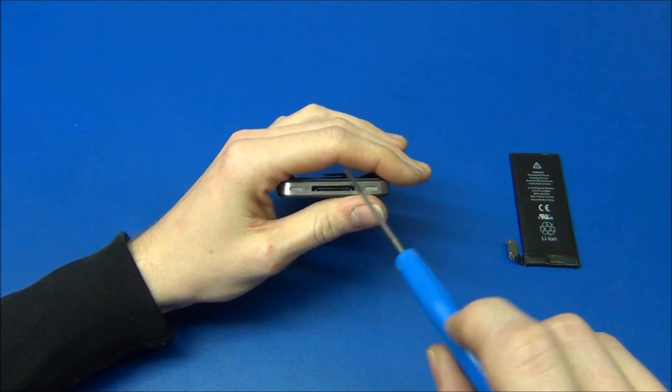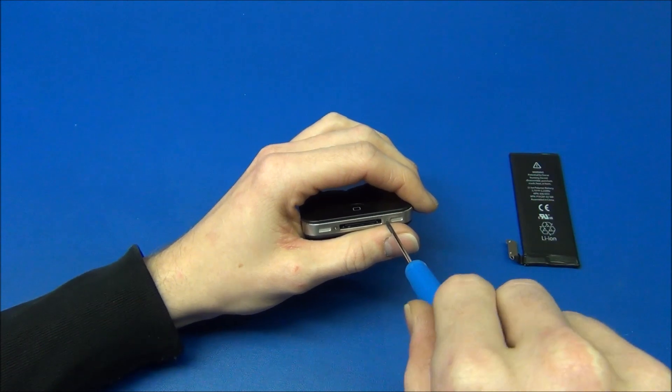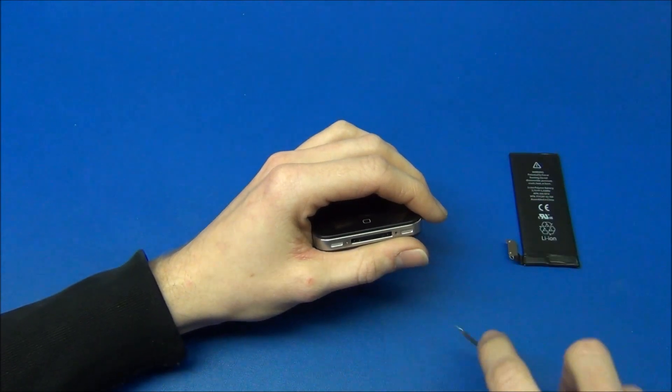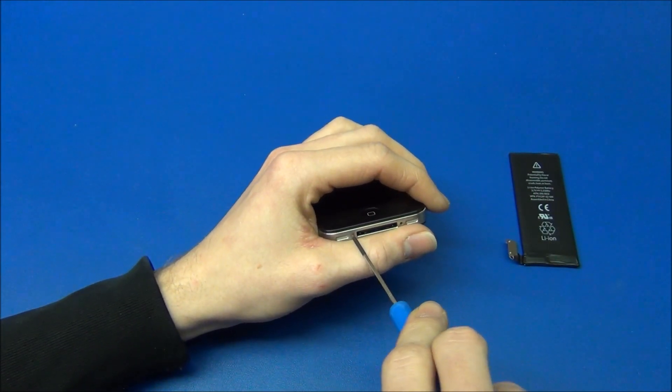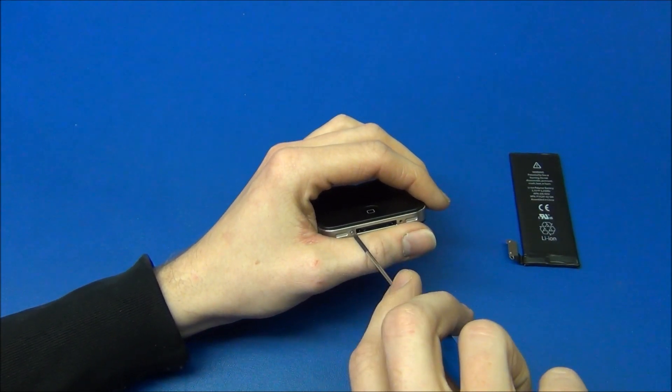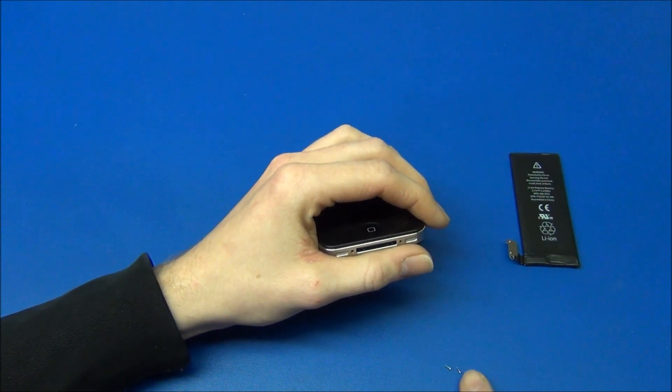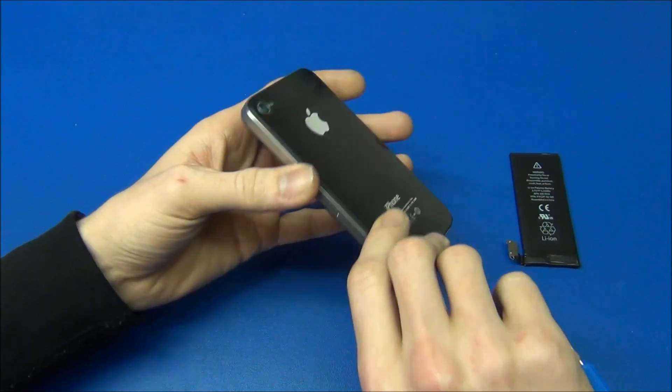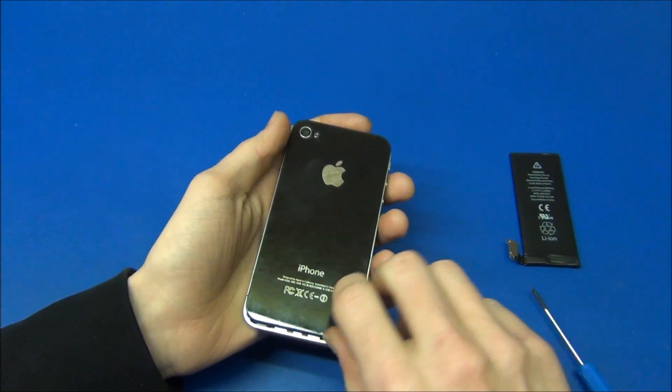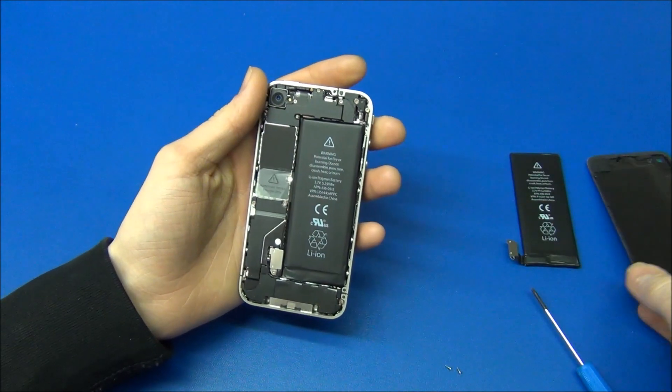It looks like these two screws is the only thing that holds the phone together. And there, let's turn it around. I think this might be the best part. I think this should slide off, yes, it does. And we're in.